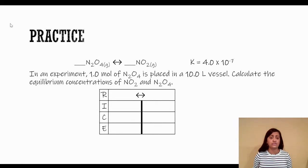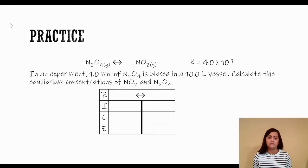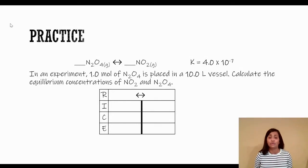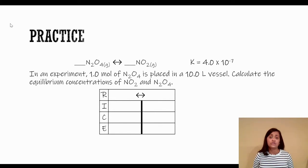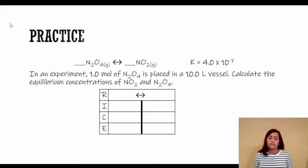For R, you just write in the reaction. I would be whatever they give you initially — a lot of times they give you just the initial conditions of the reactants and not the products, so you put zero for the products. For C, that's your change in terms of X based on stoichiometry. If you had two moles of your reactant, it's a minus 2x; if three moles of product, it's plus 3x. For reactants we subtract, for products we add. Equilibrium is the sum of initial and change, and we use the K value to solve for X.